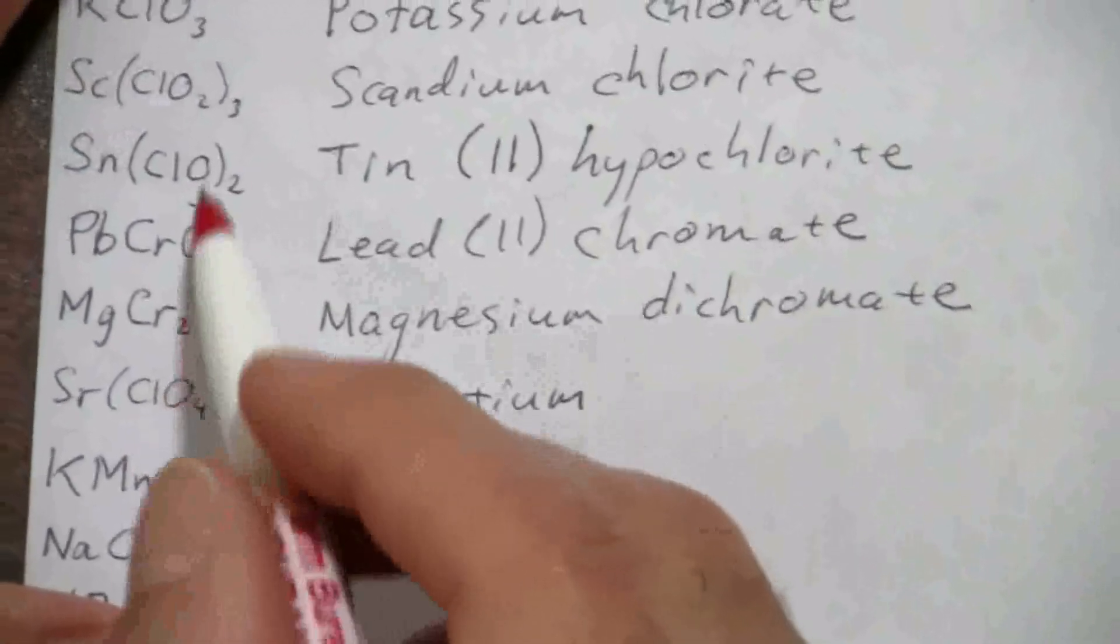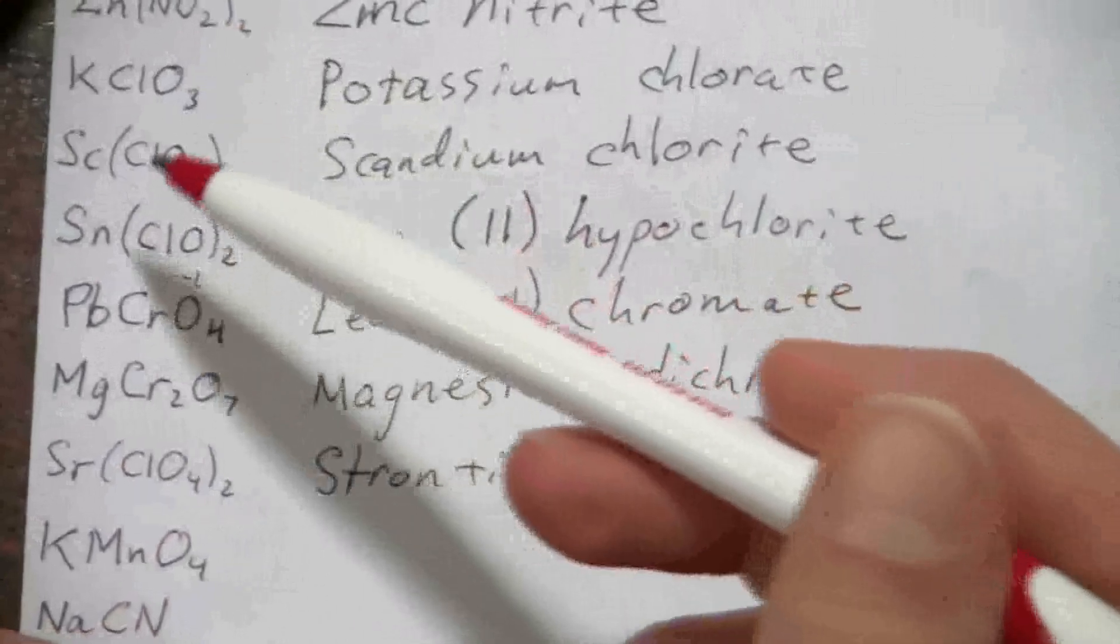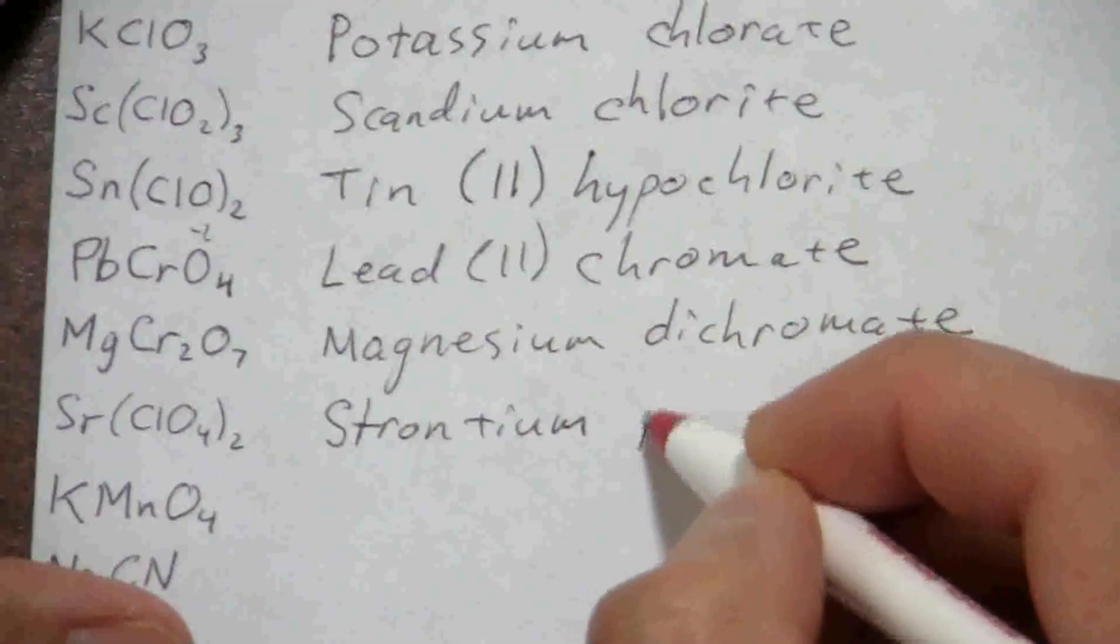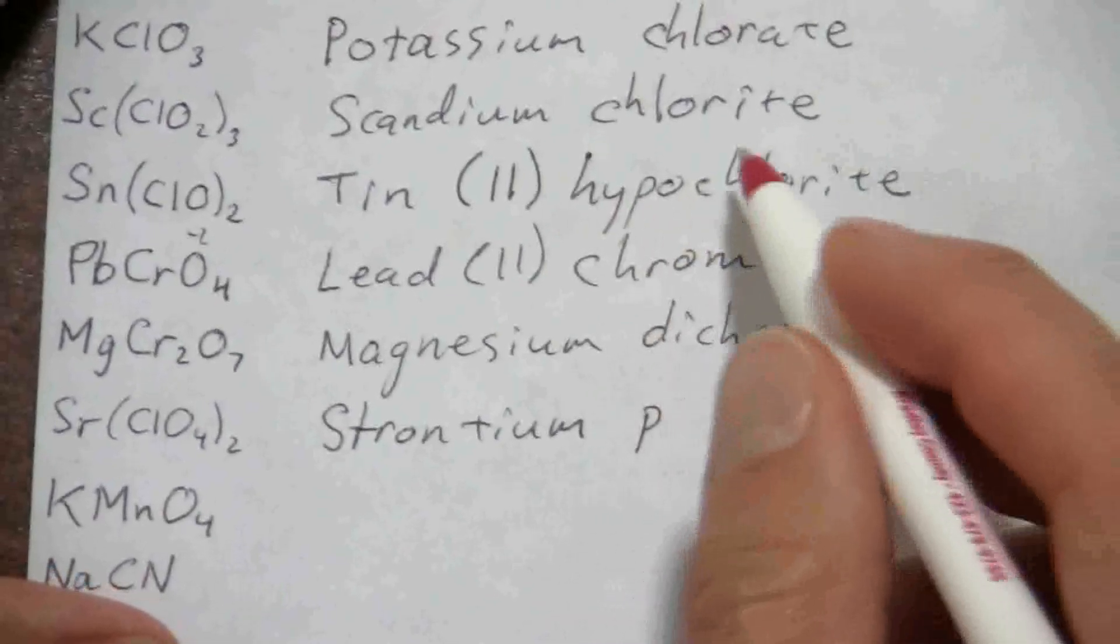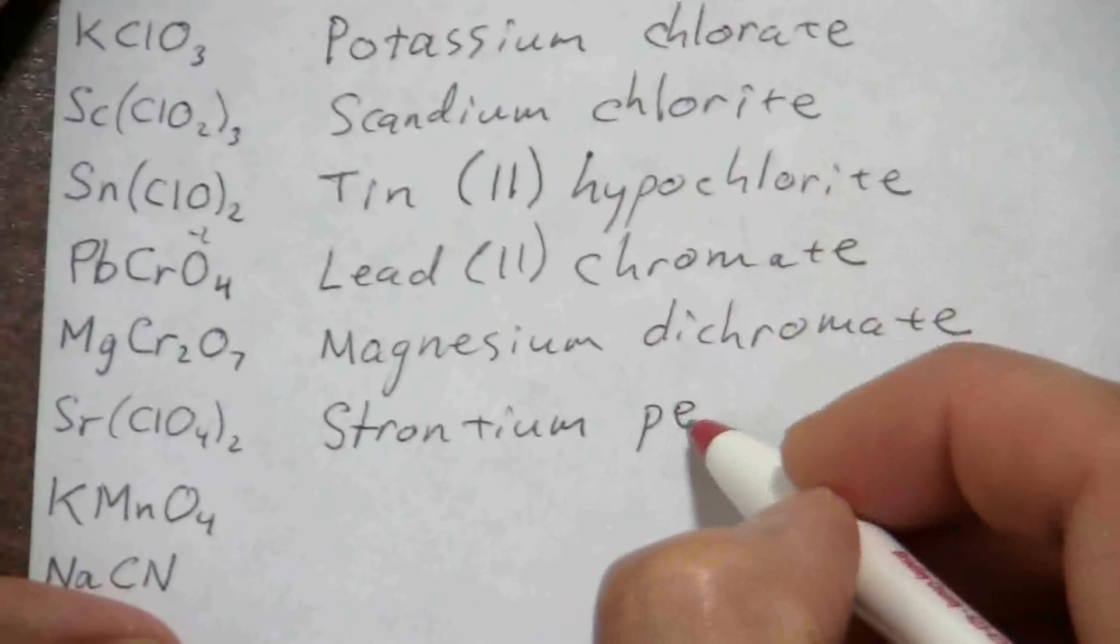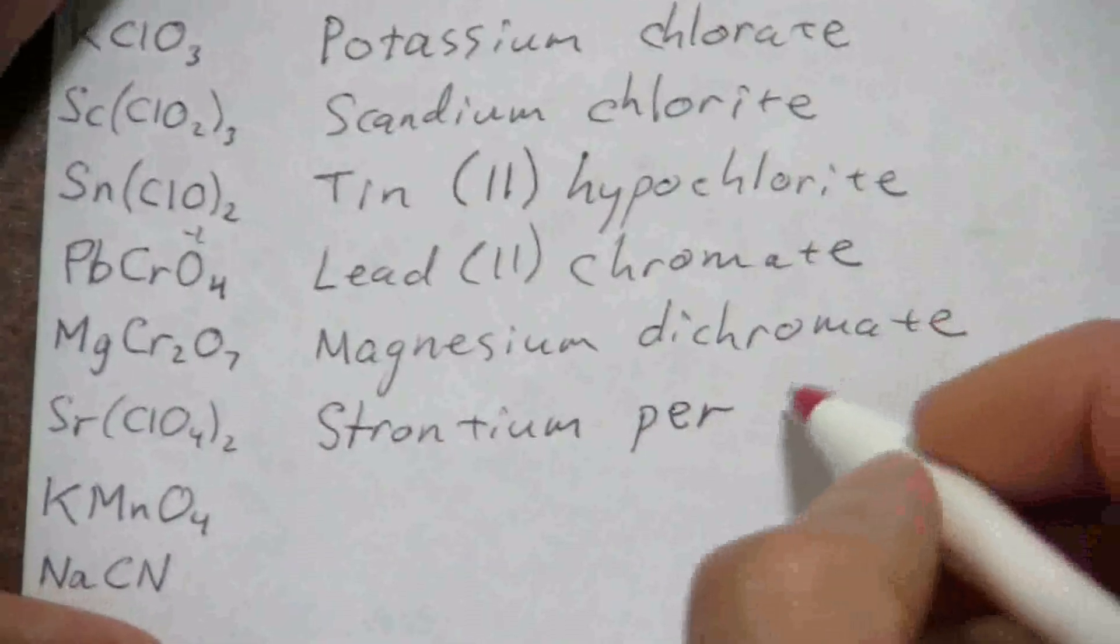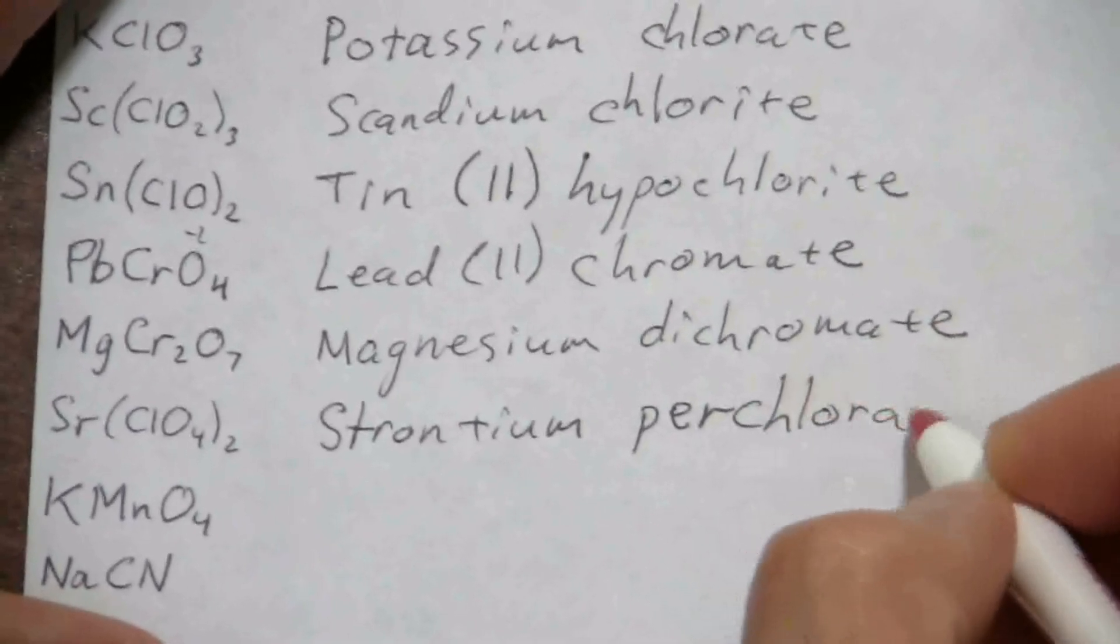But we have the ion here that is in the sequence on the other end. It has one more oxygen, so we give it a prefix just like we gave the hypochlorite a prefix. The prefix when you have one more oxygen is per, so we would say this is strontium perchlorate.